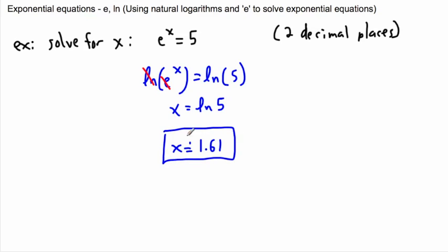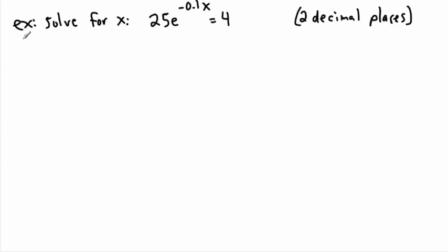There's not really much to it — you just have to be careful about your rules. Let's do another one. This looks more complicated: solve for x where 25e to the minus 0.1x equals 4.